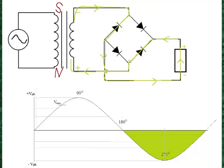Current goes through this diode, back around, through the transformer secondary. This would be increasing in voltage, but we're ignoring that — we're just looking at the path for that negative alternation.